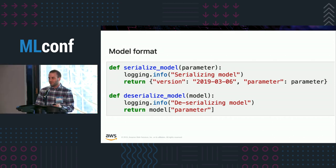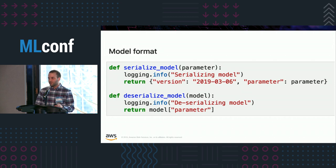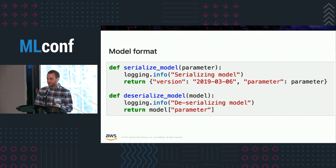You also think about the model format. It could be a proprietary model format, like a black box, in which case you can vend your model through the SageMaker model packages on the AWS Marketplace. Or if it's an open format, you can provide and document code showing how to introspect the model, such as this deserialization and serialization code, where the date is used as the version and the parameter is the mean learned from the training job.